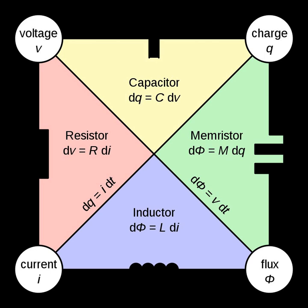A Current Controlled Voltage Source generates a voltage based on an input current elsewhere in the circuit with respect to a specified gain, has zero input impedance and zero output impedance, and is used to model transistors. The gain is characterized by a transfer impedance with units of ohms. A Current Controlled Current Source generates a current based on an input current and a specified gain, used to model bipolar junction transistors. It has zero input impedance and infinite output impedance. These four elements are examples of two-port elements.